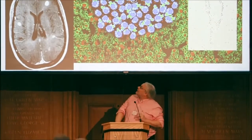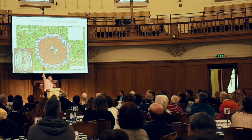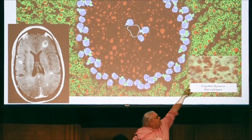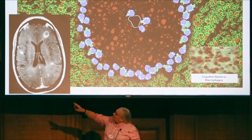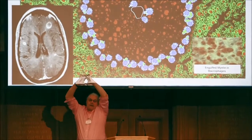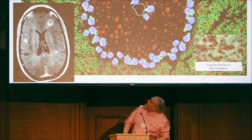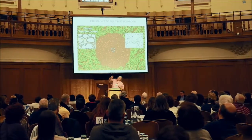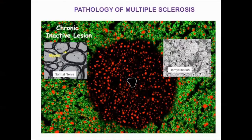What happens next is the lesions expand a bit. You get damage to the myelin in the middle, then an active rim where macrophages — gobbling cells — gobble up the myelin. They appear red in the slide because of the lipid inside the macrophage, and on the MRI you can see the ring of the lesion. Eventually, after two to about six weeks, the lesion is controlled and you have a demyelinated lesion: the black myelin ring around the axon is gone.